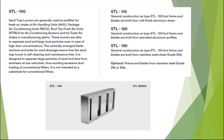The construction standard for sand trap louvers uses galvanized steel sheets: the frame is gauge 16 and the blades are gauge 18. It comes with a steel bird screen of 12 by 12 by 1 mm fixed behind the blades. The minimum neck size is 150 by 150 mm and the maximum size is 2200 by 1200 mm.